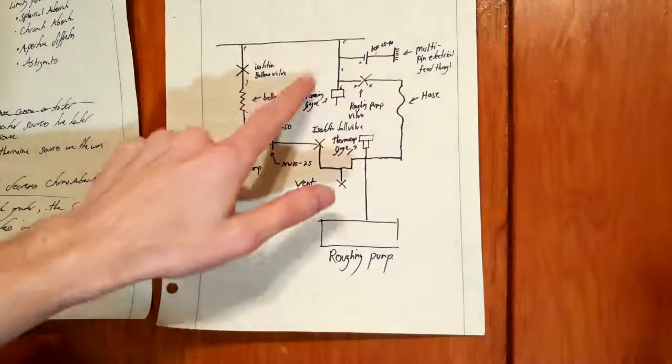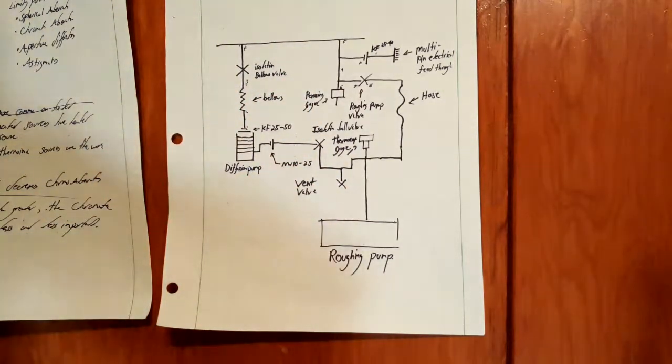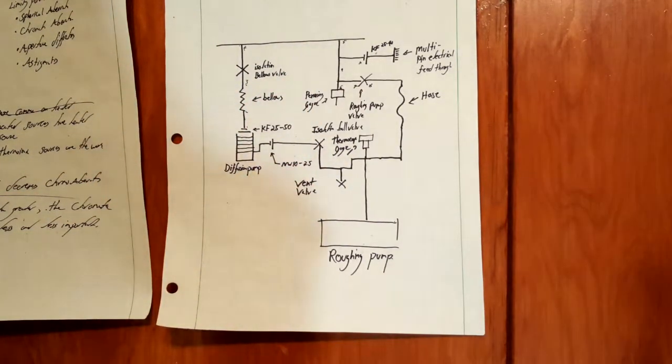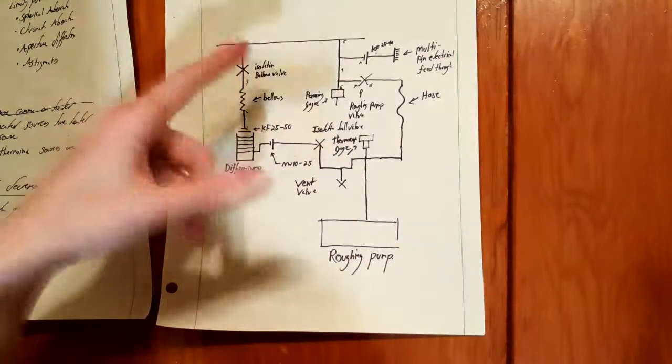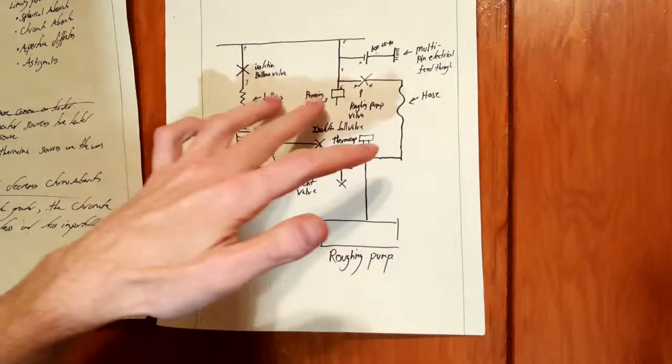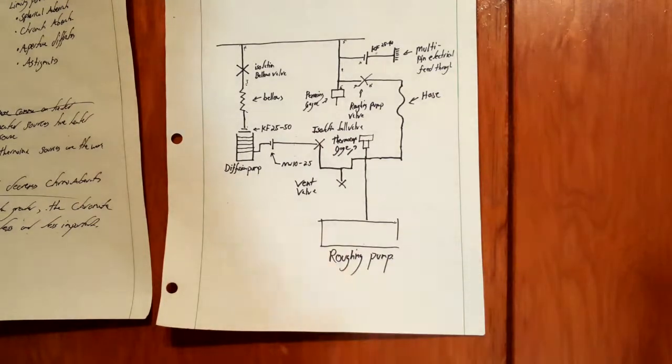On the diagram here I have a penning gauge. Right now my penning gauge controller is having a little cord issues, so right now I have a tyranny gauge on it which is working fine since I'm not going down to super high vacuum anywhere at the moment.